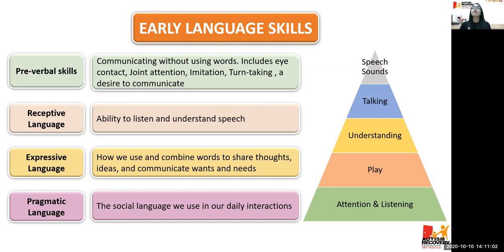Expressive language is how we use and combine words to share thoughts, ideas, and communicate wants and needs — this includes requesting, protesting, commenting, asking questions, and answering questions. Lastly, pragmatic language, also called social communication, is the social language we use in our daily interactions. These are the early language skills based on the speech therapy aspect.